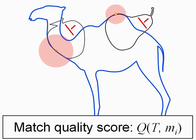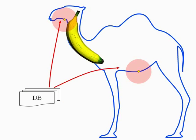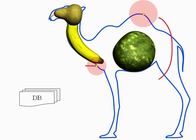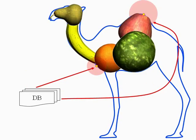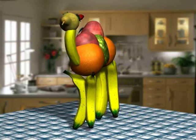For example, we filter out shapes that are too far outside the target surface. In the automatic construction mode, we continue building the collage in a greedy manner, placing the match with the best score in each step. Here is the ray-traced final result.